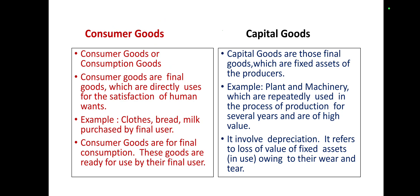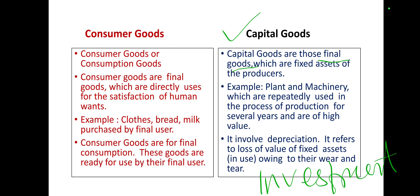Now, capital goods. Capital goods are those final goods which are purchased by a producer as an investment — that is, the fixed assets of the producers, like plant and machinery. Plant and machinery are fixed assets which are used repeatedly in the process of production for several years and are of high value.